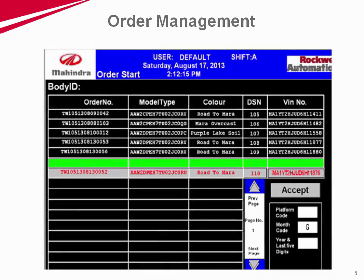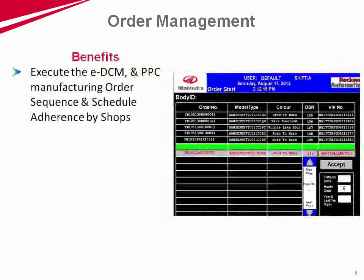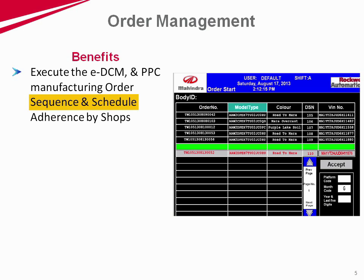MES uploads and schedules the PPC platform-wise vehicle order sequence centrally on a periodic basis. The system converts the vehicle sequence into individual shop orders based on master data of model codes and bill of materials. These orders are routed and executed by respective shops.